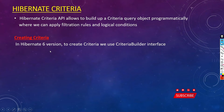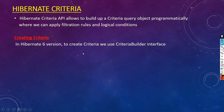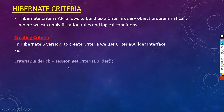I'm discussing Hibernate 6 version here. To create criteria in Hibernate 6, we use the CriteriaBuilder interface. In older versions like Hibernate 4 and 5, we used the Criteria interface directly, but that has been removed in Hibernate 6. In Hibernate 6, we need to use the CriteriaBuilder interface. For example: CriteriaBuilder cb = session.getCriteriaBuilder().